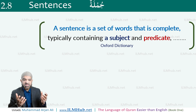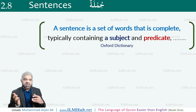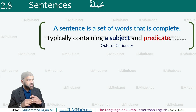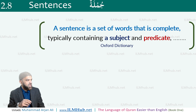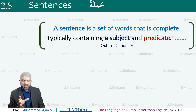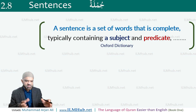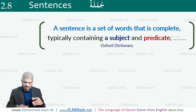The definition of a sentence, according to the dictionary: a sentence is a set of words that is complete — i.e., gives us a complete meaning — typically containing a subject and a predicate. So it has two parts: the subject and predicate. This we should be familiar with already, as I explained some of it in the introductory session.